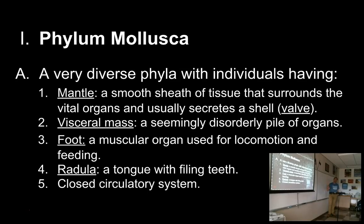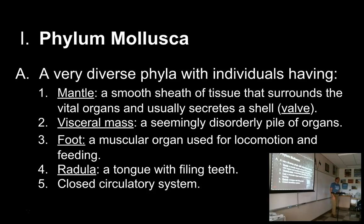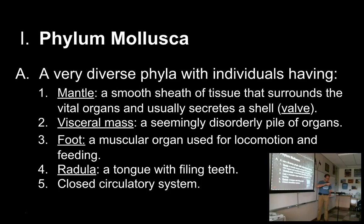Usually mollusks have shells, and the shell will be secreted by the mantle. So the mantle sits somewhat loosely over the organs and then makes a shell on top of it. In mollusks we call a shell a valve. If a mollusk has one shell, they're a univalve; if they have two shells, they're a bivalve. Valve is the word for a shell.